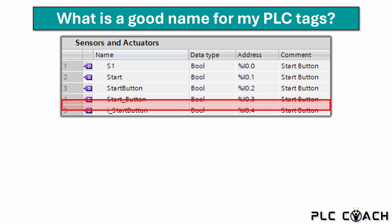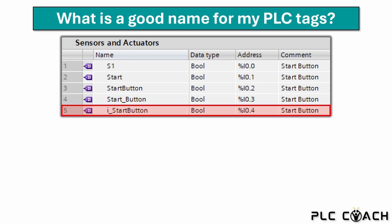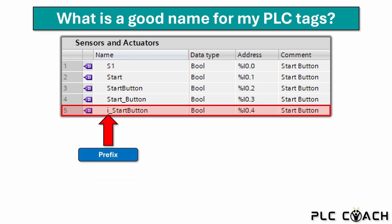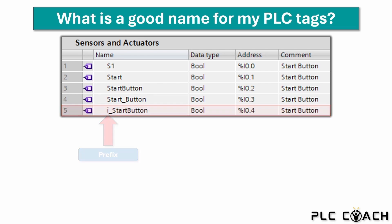Let's take a look at the last row. You will notice a letter before the name — this is called a prefix. Prefixes can give you additional information about the tag, for example the data type, or specify that the tag represents an input. For practice, you can name your PLC tags however you like — it's all about what works best for you.